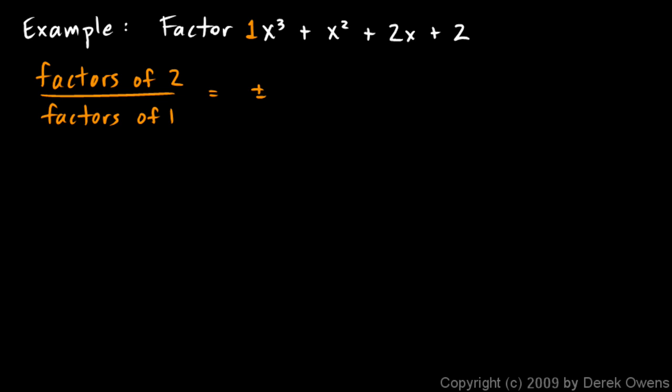and I think about factors of 2 over factors of 1. And that's really easy. The factors of 2 are just 1 and 2, and 1 is the only factor of 1, obviously. So we just have plus or minus 1 or 2. So only four possible numbers here that could be rational zeros for this polynomial.